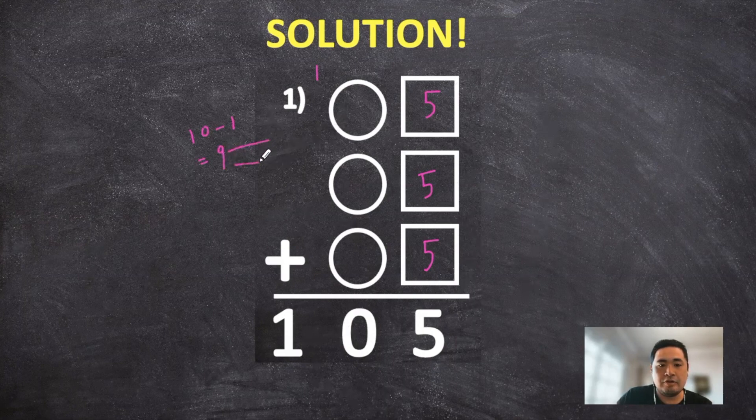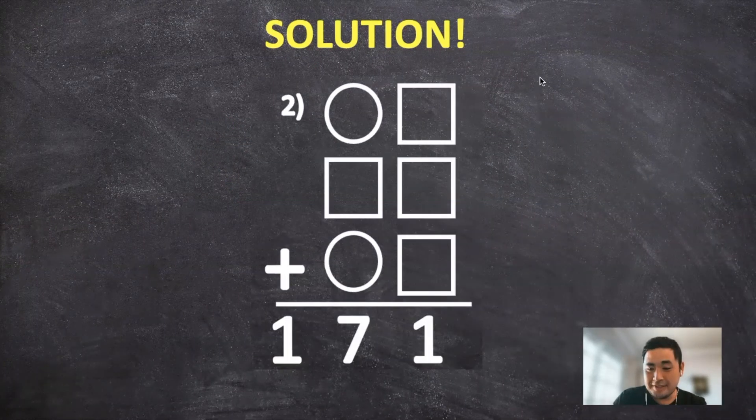So if you think about separating the 9 into three of the circles, we know that each circle has to equal 3.